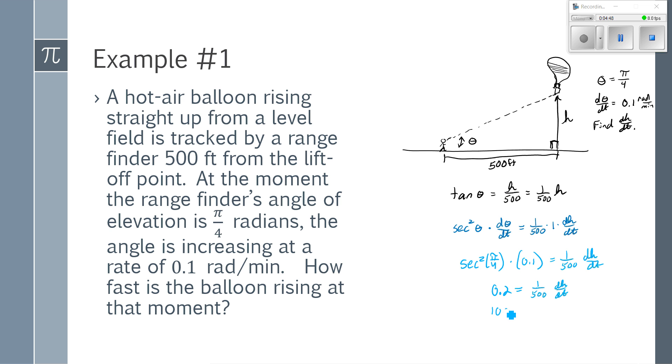So I have 100 is equal to dh/dt. I do typically need to give units for this. Even though it doesn't say it on the AP exam, they pretty much always ask for units for these. So for this, my units of distance are being measured in feet. My time is being measured in minutes. So my balloon is rising at 100 feet per minute at the moment in time when theta is π over 4.